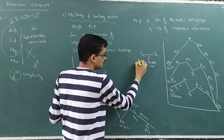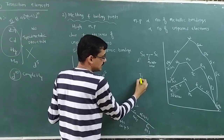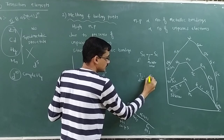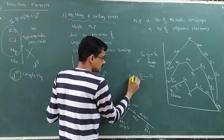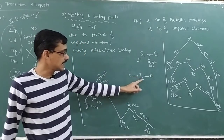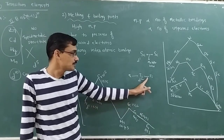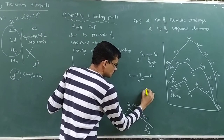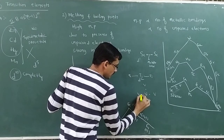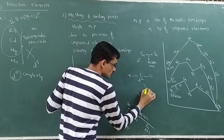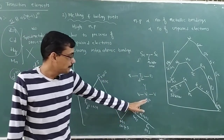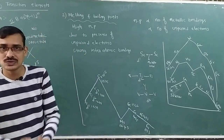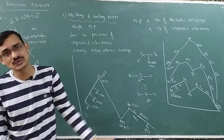Titanium has D2 configuration — two unpaired electrons — so it can form two metallic bonds. Vanadium has D3 — three unpaired electrons — forming three metallic bonds. As the number of unpaired electrons increases from D1 to D2 to D3, the number of metallic bonds also increases, and therefore the melting point increases.